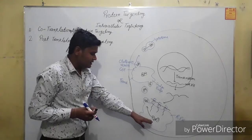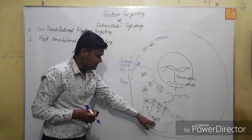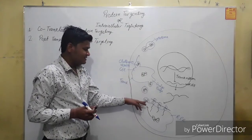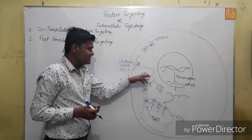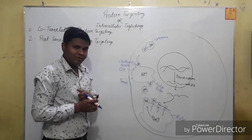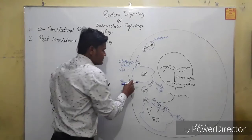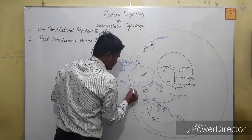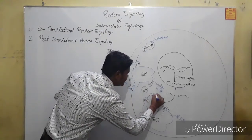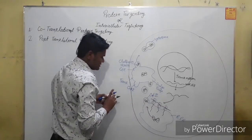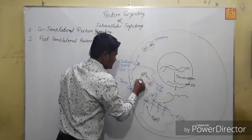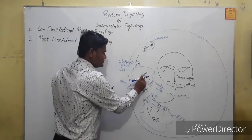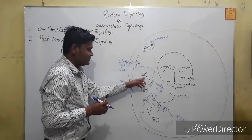If there is a chemical modification that occurs inside the ER and some modification is left incomplete inside the protein, that means it is not a correctly processed protein. In that case, the Golgi apparatus forms special types of vesicles known as COP vesicles. One is known as COP2 and another is known as COP1. The COP1 vesicle takes this incorrectly processed protein back for further modification.